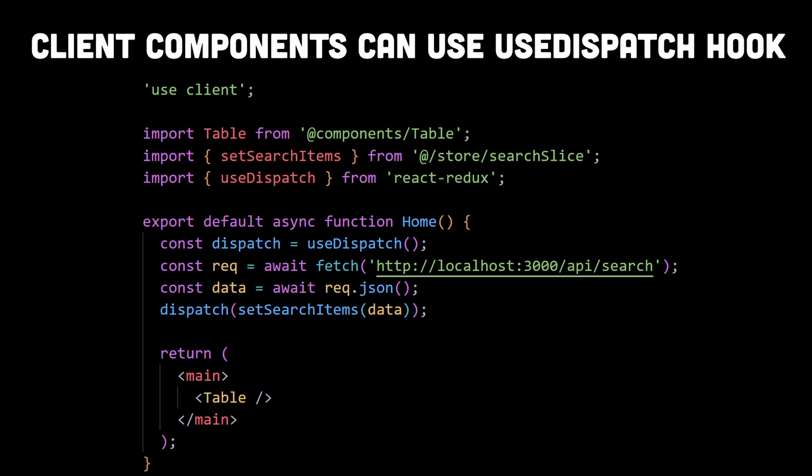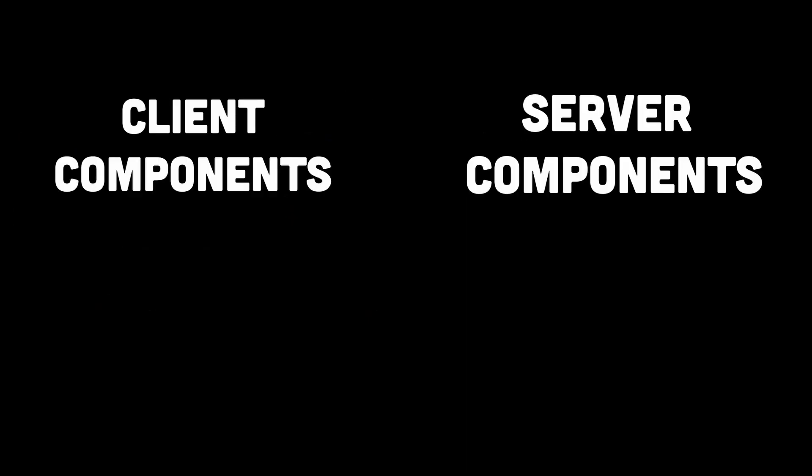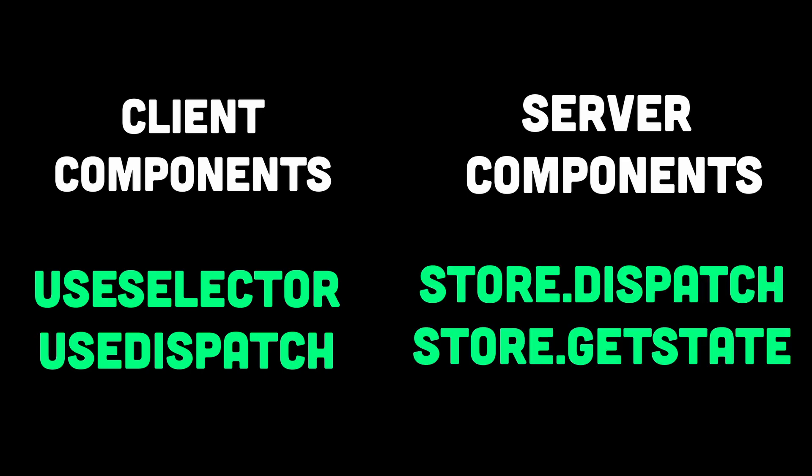Whereas on the client component, when we use the use client directive, we can use all the React hooks normally as we always did before. To update the state we can use the useDispatch hook, and to access state we can use the useSelector hook and so on. This ends up providing two entirely different ways to work with global state management, and on server components we aren't even able to utilize the special hooks provided by Redux Toolkit out of the box.